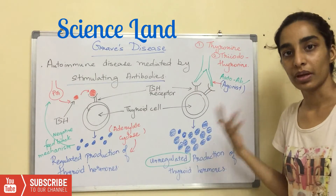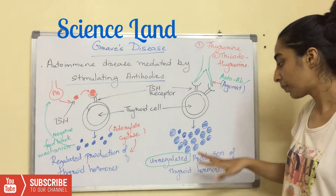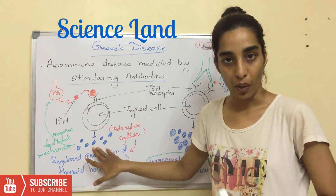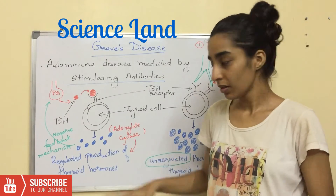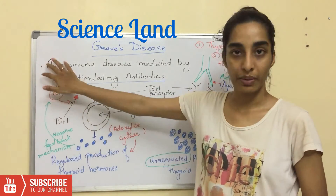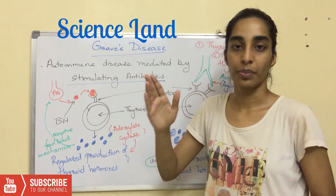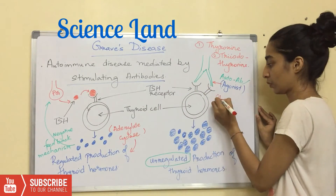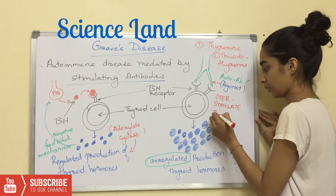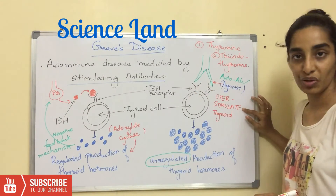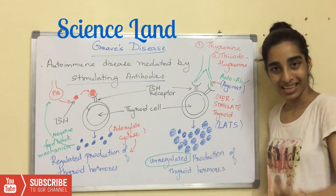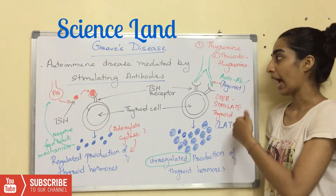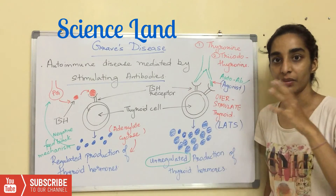So the body keeps on producing thyroid hormones. There is no limit to the production — thus, unregulated production of thyroid hormones. When thyroid hormone is sufficient for a person, it normally gives a negative feedback to the pituitary gland asking it to stop the production of thyroid stimulating hormone. That is the basic difference. These antibodies over-stimulate the thyroid, and thus these antibodies are known as LATS — Long Acting Thyroid Stimulating antibodies.